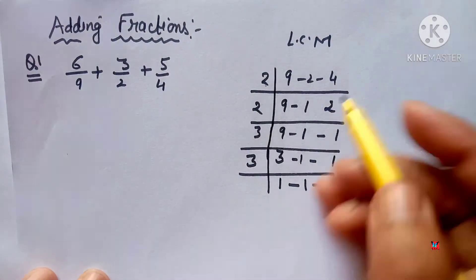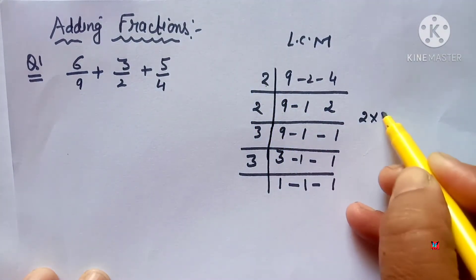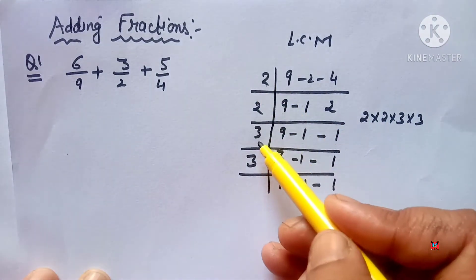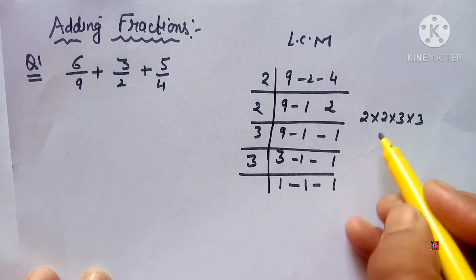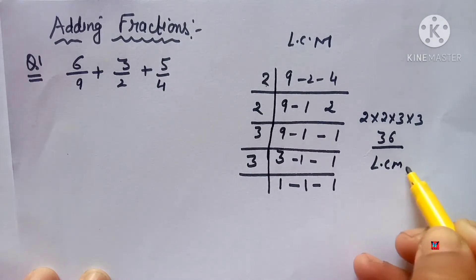LCM is calculated by multiplying: 2 multiply by 2 multiply by 3 multiply by 3. These people multiply: 2 × 2 is 4, 4 × 3 is 12, and 12 × 3 is 36. So the LCM is 36.